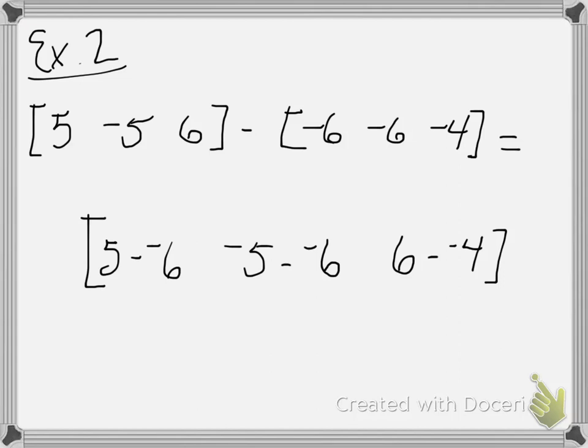So 5 minus negative 6 plus plus, that's 11. We'll do the same thing with the next two elements. We'll do the plus plus for the middle and that becomes 1. And plus plus for 6 plus 4 is now 10. So 11, 1, 10 is my difference matrix.